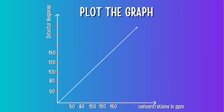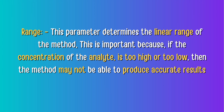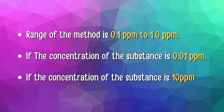In this example, the range of our method is 50 ppm (50%) as the lower level and 150 ppm (150%) as the upper level. As per the Beer-Lambert law, the concentration of the substance is proportional to its absorbance. The range parameter determines the linear range of the method, because if the concentration of the analyte is too high or too low, the method may not produce accurate results. For instance, if the method range is 0.1 to 1.0 and the concentration is 0.01 or 10, results may be inaccurate or outside the linear range.